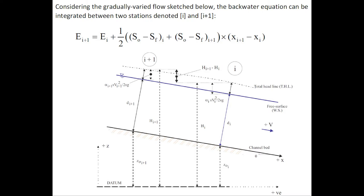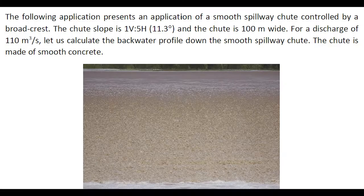Considering the gradually varied flow sketch here, the backwater equation can be integrated between the two sections denoted i and i plus 1.